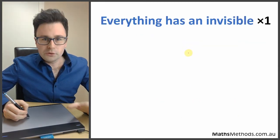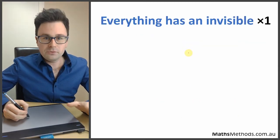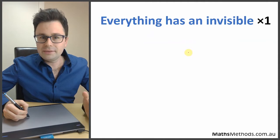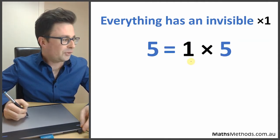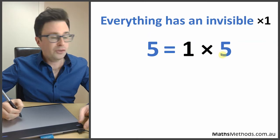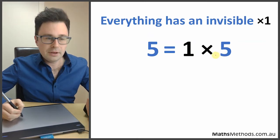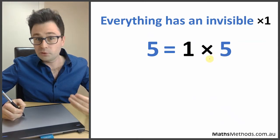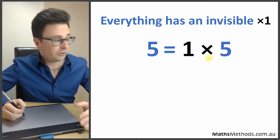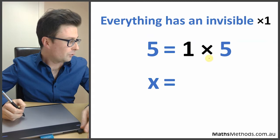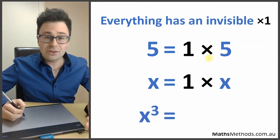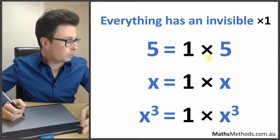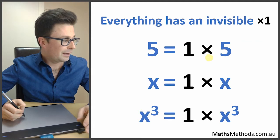One thing you've got to know is that everything has an invisible times 1, because everything has 1 of itself. So if you've got 5, this is the same as saying 1 times 5. We don't say the 1 times because it's obvious, but x would be 1 times x, and x to the power of 3 would be 1 times x to the power of 3.